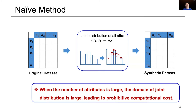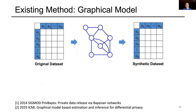However, when the number of attributes is large, the domain of joint distribution is extremely large, leading to prohibitive computational cost. The state-of-the-art approach is to learn a graphical model from the original dataset in a differentially private manner and generate the synthetic dataset from the graphical model.